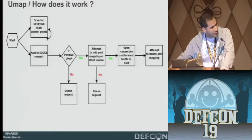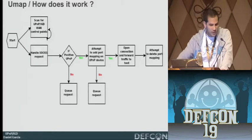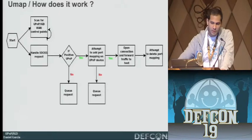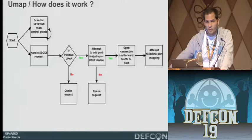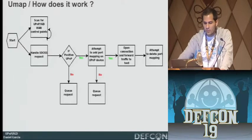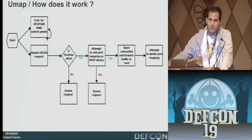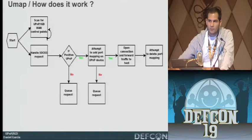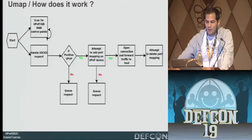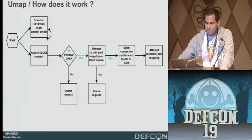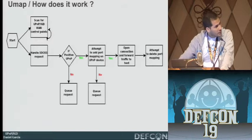Here's a flow diagram of how UMAP works. It takes a list of IPs and scans for open control points or UPnP devices. Once it receives a SOCKS request, if it finds a positive UPnP device, it attempts to add a port mapping, then opens the connection and pipes it through to the client making the SOCKS request. After that, it attempts to delete the port mapping.